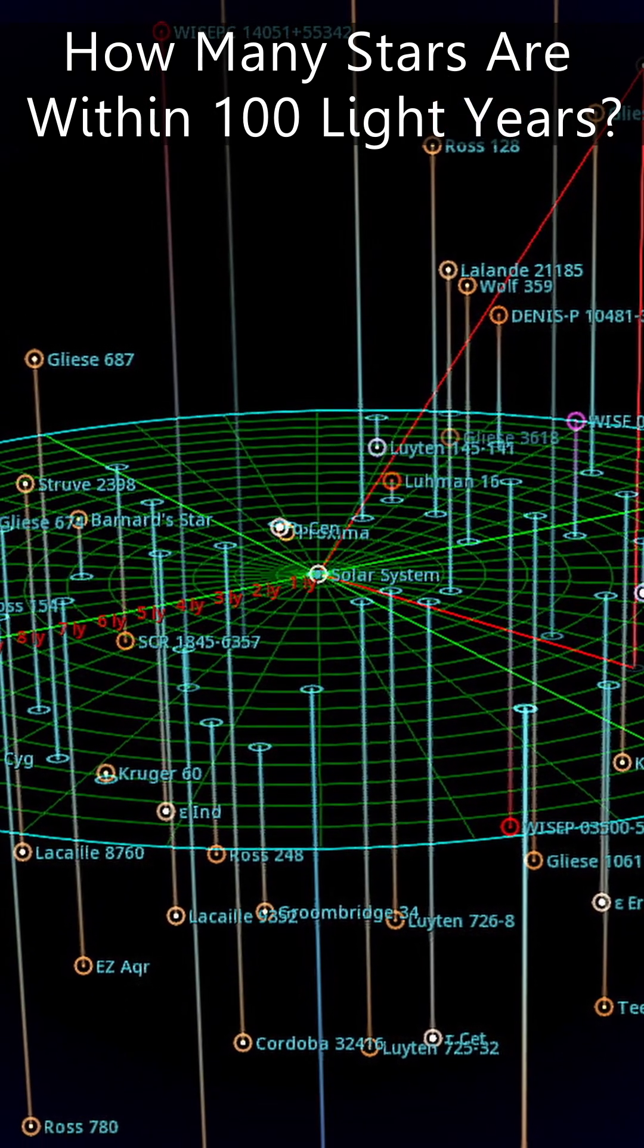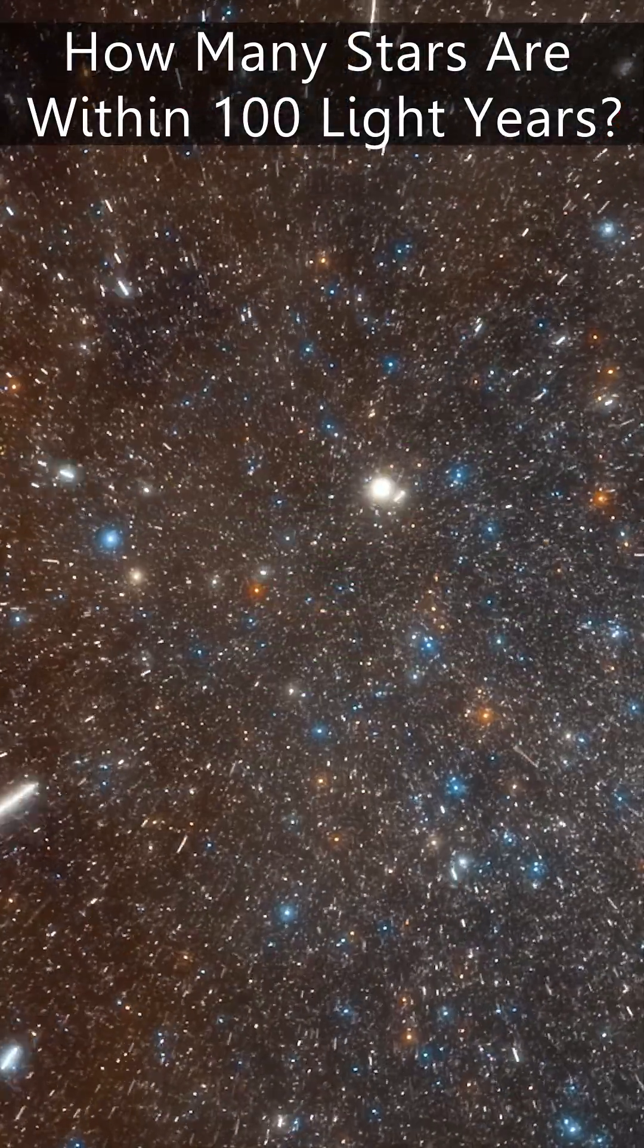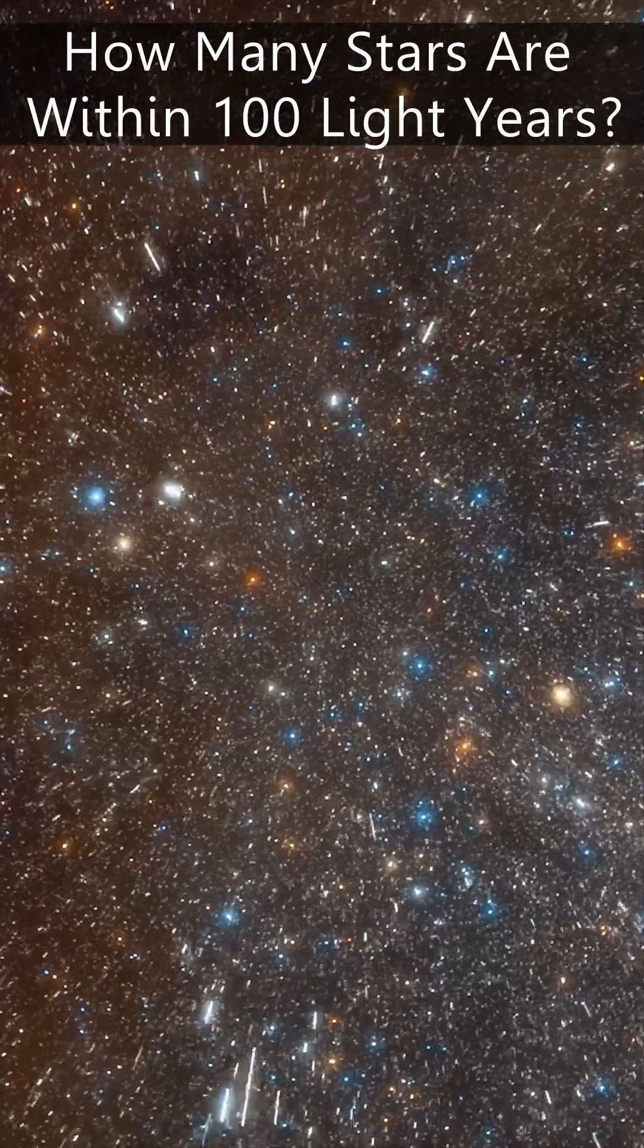As a result, there are over 100 stars within 20 light years of Earth, and around 1000 within 50 light years of Earth, and perhaps 10,000 within 100 light years.